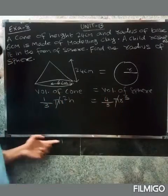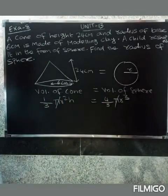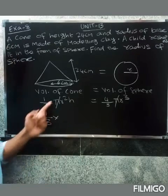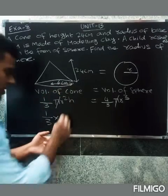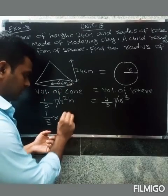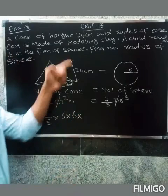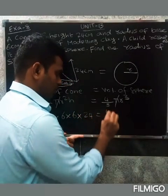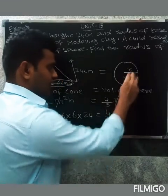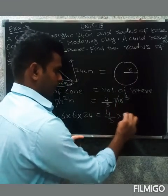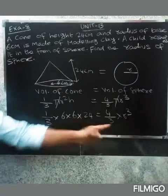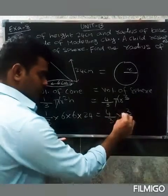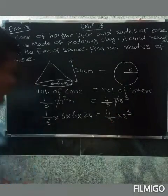Pi cancels on both sides. Substituting values: one-third into radius 6 squared, so 6 into 6, into height 24, equals four-thirds into the radius of the sphere cubed. So we need to find r cubed.